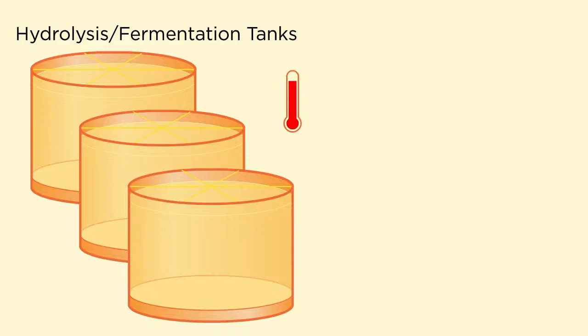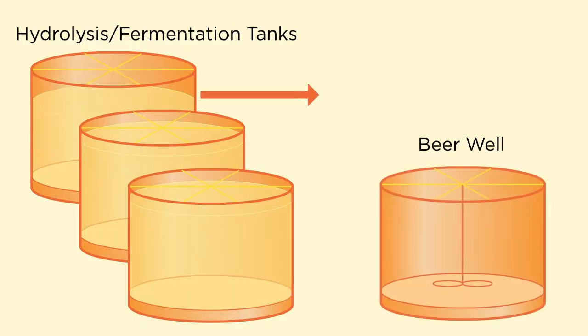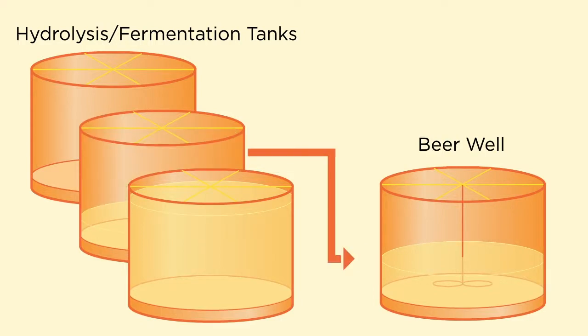After the appropriate amount of time at the hydrolysis temperature, we lower the temperature and then pitch the yeast in the same tank and fermentation takes place. The product of fermentation is beer, which is then pumped to the beer well.